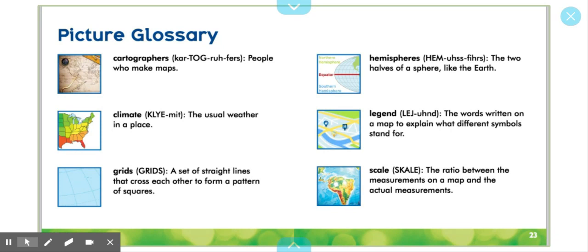Grids: A set of straight lines that cross each other to form a pattern of squares. Hemispheres: The two halves of a sphere, like the Earth.